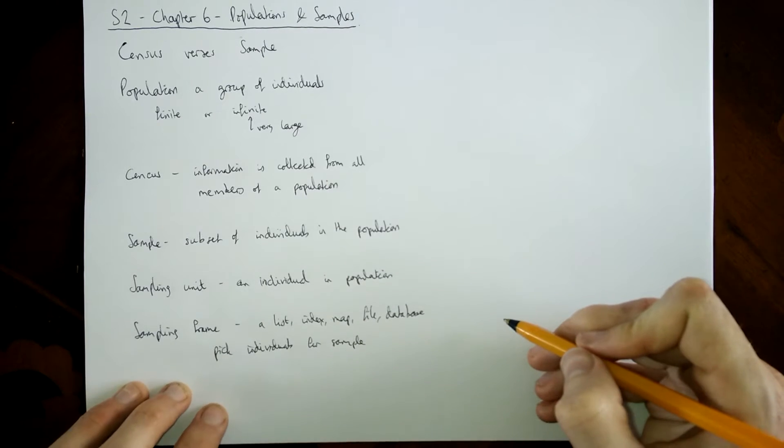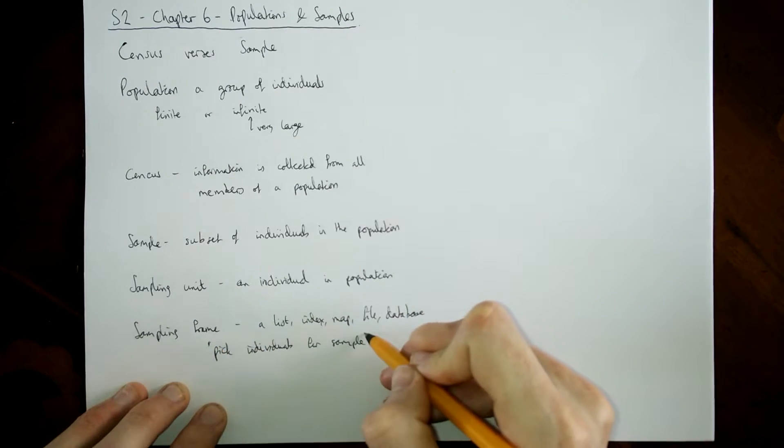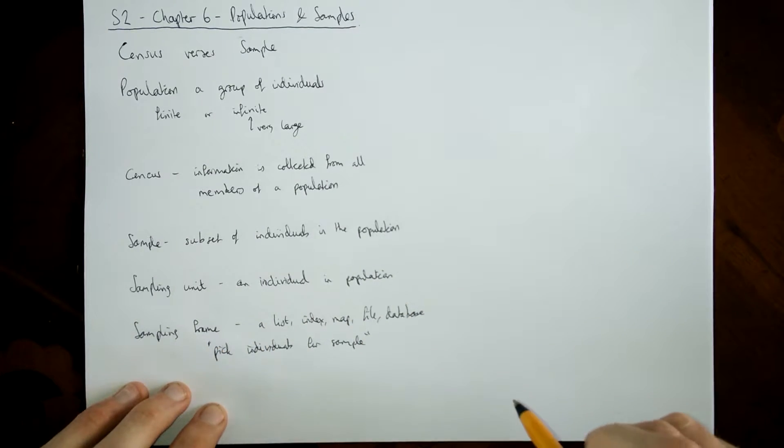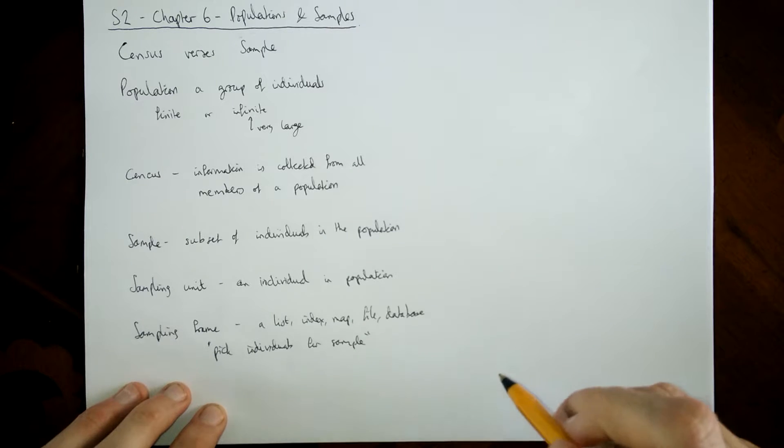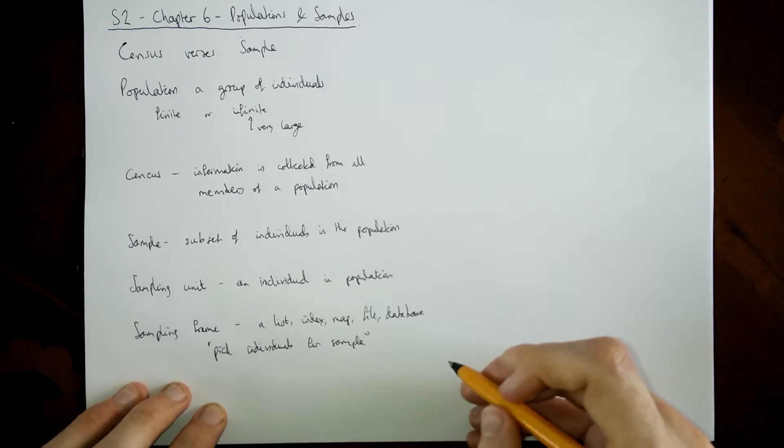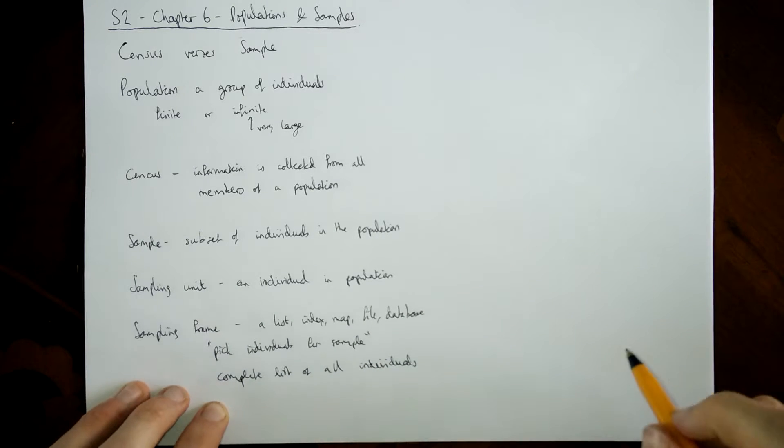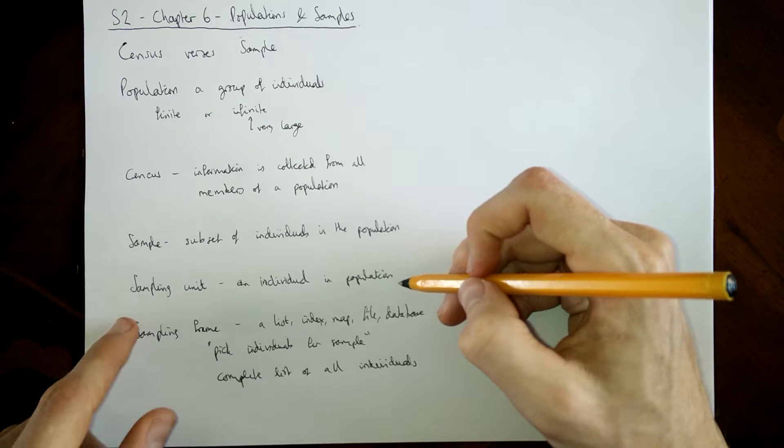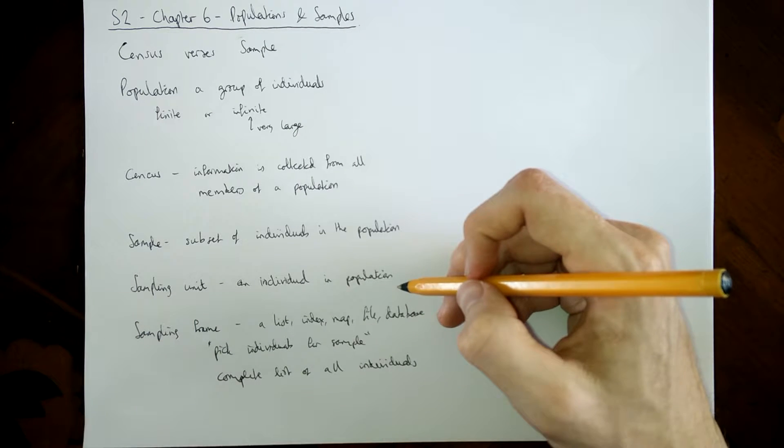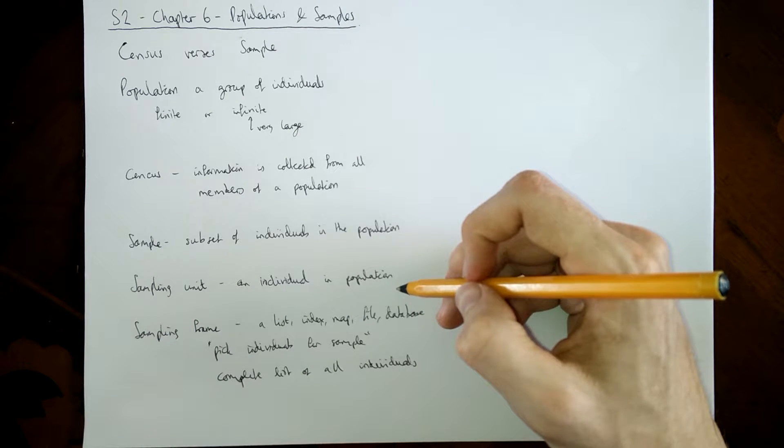Now to be a sampling frame, what we need to do is make sure that every single member of the population, every individual, is in that list somewhere. So it must be a complete list. If every sampling unit isn't included, it's not a sampling frame. Which may seem pedantic, but it's often harder than it looks to find a sampling frame.